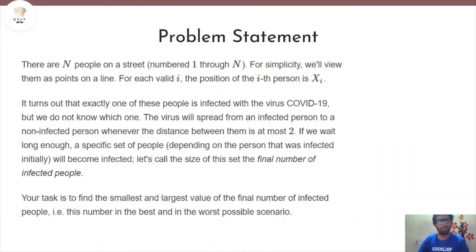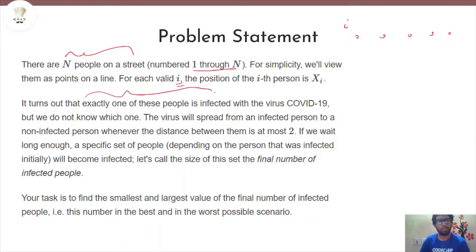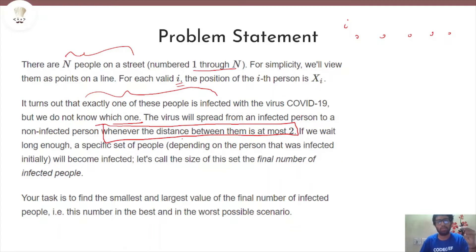Here it's given to us that n people are on a street and they are numbered from 1 to n. For simplicity we'll view them as points on a line. So there are n people here and we are given n. For each valid i, the position of the i-th person is xi. Now it turns out that exactly one of these people is infected but we do not know which one. The virus will spread from an infected person to a non-infected person whenever the distance between them is at most 2.